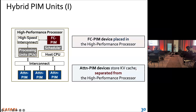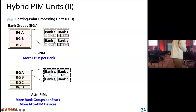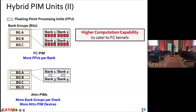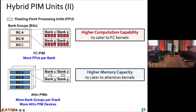We can add more attention PIM units to provide higher memory capacity and higher memory bandwidth. In each bank of FC PIM, we integrate four floating-point processing units so that we have more FPUs per bank to provide higher computation capability to cater to FC kernel demands. For the attention PIMs, we have more bank groups per stack and more attention PIM devices, providing higher memory capacity to cater to attention kernels.